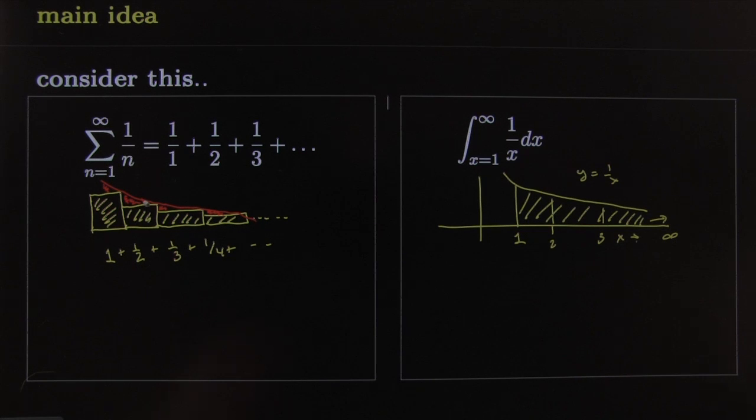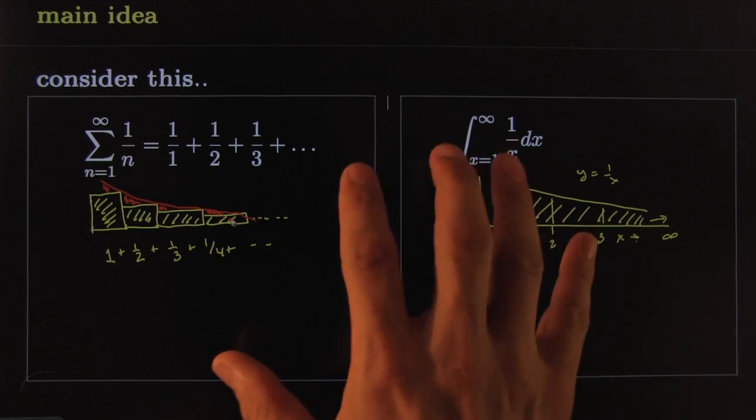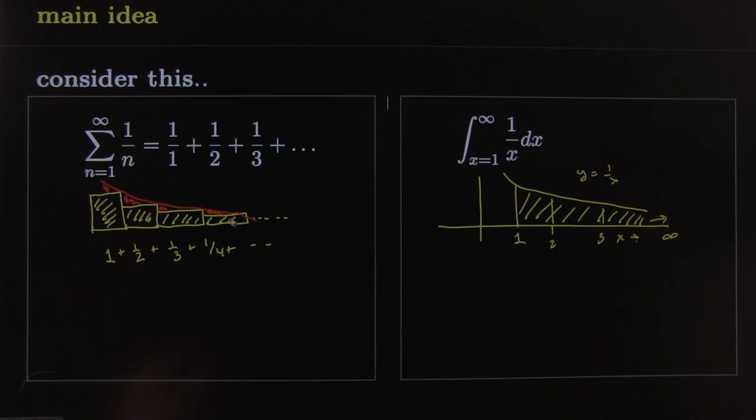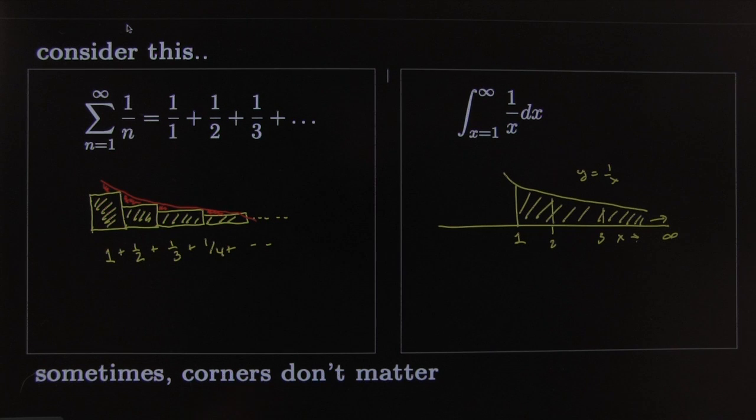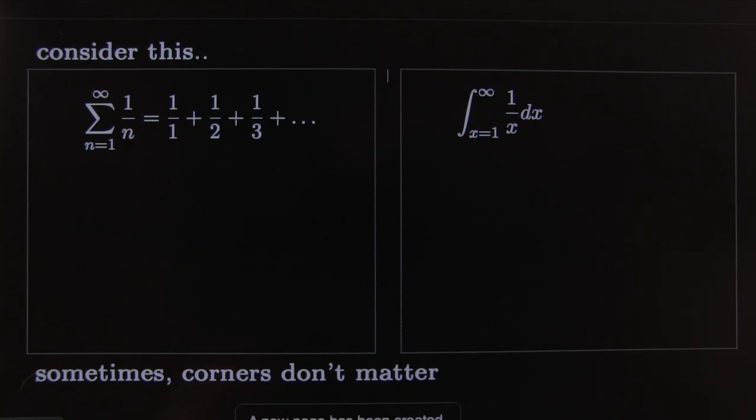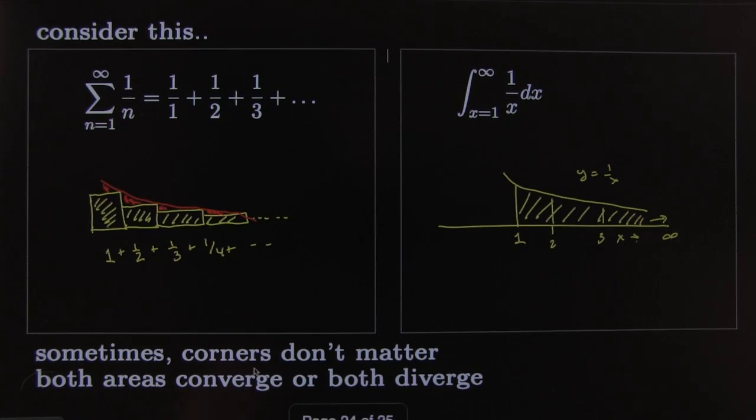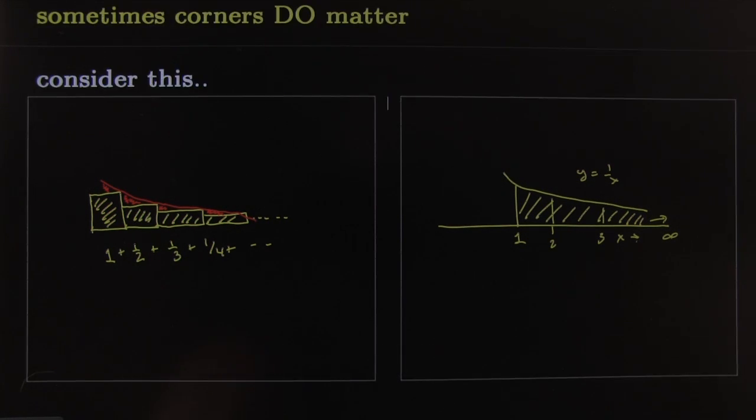...affect convergence or divergence? And the truth is, sometimes they do and sometimes they don't. Sometimes the corners matter and sometimes they don't. All that error is really finite and insignificant in the big picture. So what we want to set out to do is to figure out when do the corners matter. And then we're going to use some nice stuff, you'll see. So the moral of the story here is sometimes the corners matter and sometimes they don't. Okay, now if the corners don't matter, then they both converge and both diverge. Let's just summarize that. But sometimes the corners do matter.